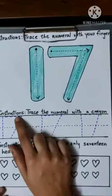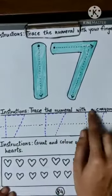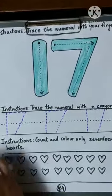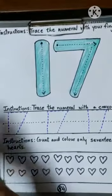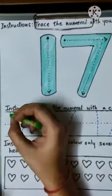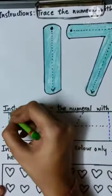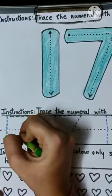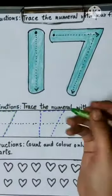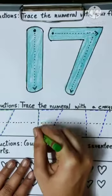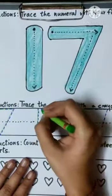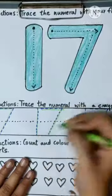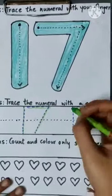Now the second instruction is trace the numeral with a crayon. So take a crayon and trace the numeral. 1, 7. 1, 7, 17. 1, 7, 17.